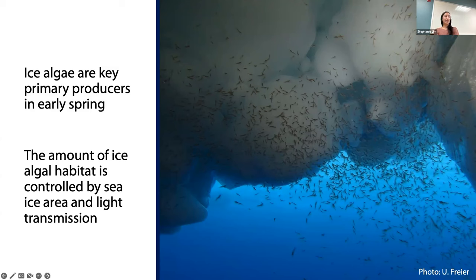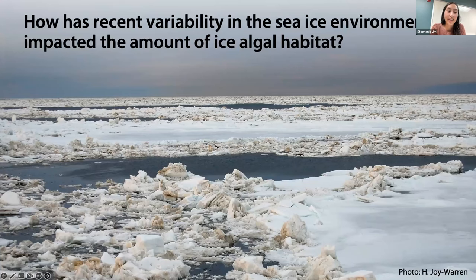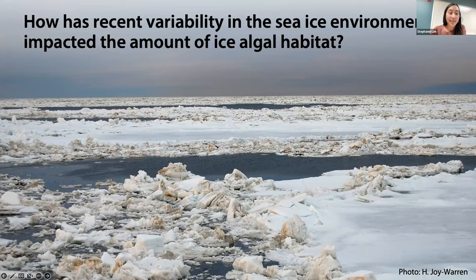Ice algal habitat is controlled at first order by sea ice area and light transmission through snow and ice. We looked at a time series of how the sea ice environment has been changing to answer how recent variability has affected ice algal habitat — leveraging natural variability as an experiment to understand important environmental factors and make predictions about the future. I've used a very similar method in both the Arctic and the Antarctic, but they tell really different stories.